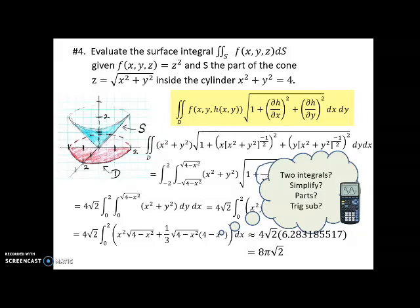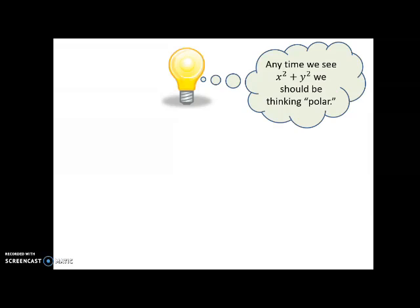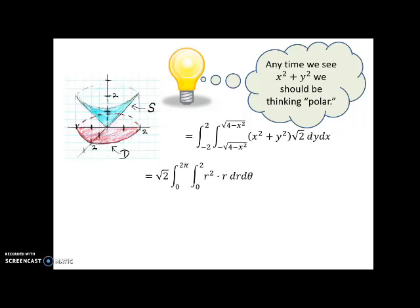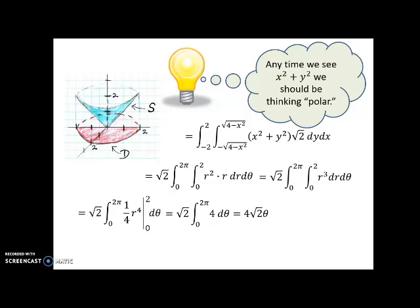Anytime we see x² + y², we should be thinking polar! Since everything is circular here, instead of that horrible Cartesian integral, I should set it up with respect to r and theta. r goes from 0 to 2, theta goes all the way around from 0 to 2π. We still have our √2 out front, and dy dx becomes r dr dθ — don't forget that extra r! Now we have r³ in the integrand. Integrate with respect to r and evaluate from 0 to 2, getting 4. Then integrate with respect to theta: theta evaluated from 0 to 2π gives 8π√2. The exact answer with very little difficulty at all!